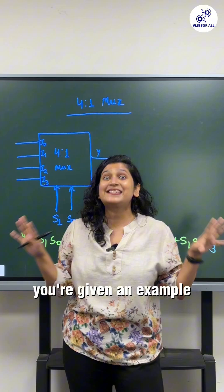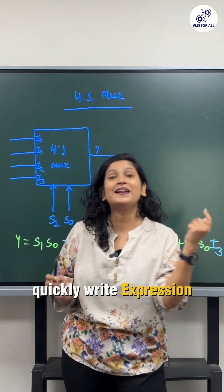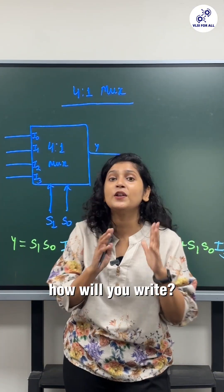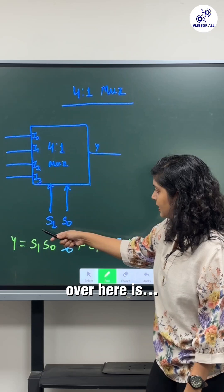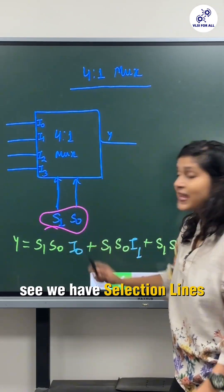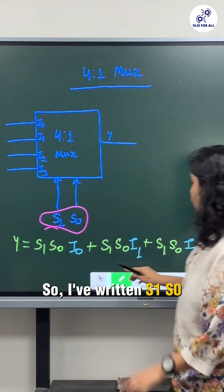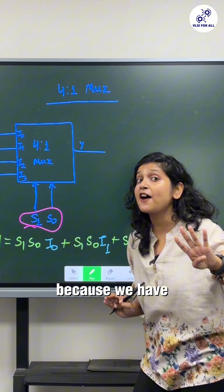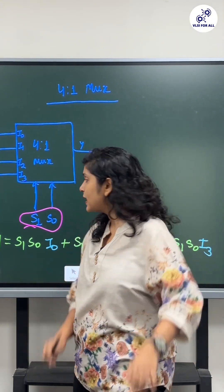So what I have written over here is, see we have selection lines S1 S0, so I have written S1 S0 four times because we have four combinations of two, right? Now we all know 0 and 1, so 00, 01, 10, and 11.